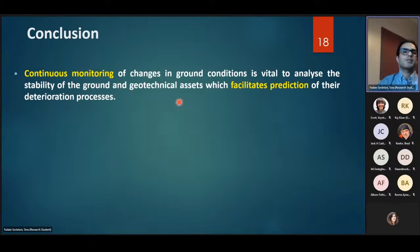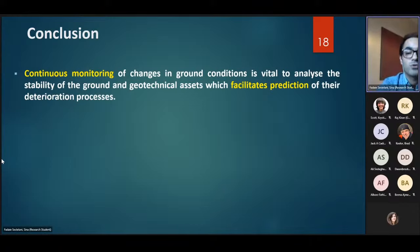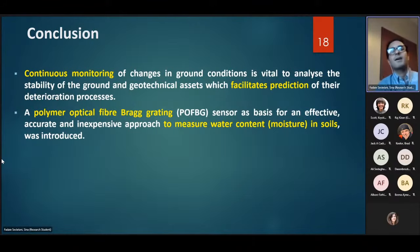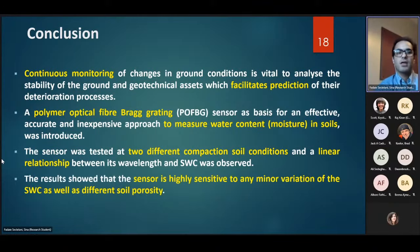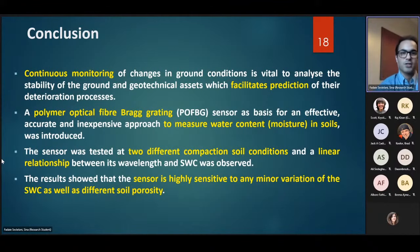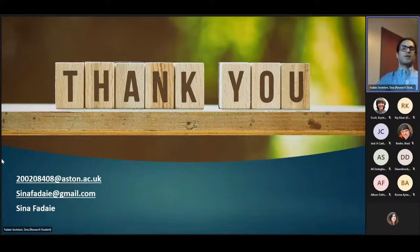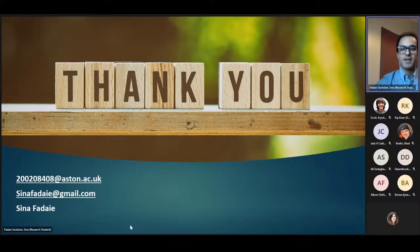In conclusion, continuous monitoring of changes in ground conditions can facilitate prediction of the deterioration process of geostructures. The polymer optical fiber Bragg grating sensor offers an effective, accurate, and inexpensive approach to measure soil water content in different soils. The sensor was tested at two different compaction conditions, and appropriate linear regression confirms that it is highly sensitive to minor variations in soil water content and also sensitive to different soil densities. Thank you so much.